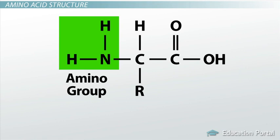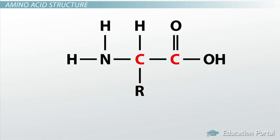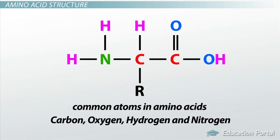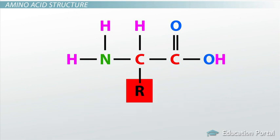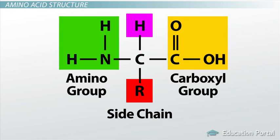and an amino group, which is the NH2 on the other side. So we have C's, O's, H's, and N's in the basic structure of an amino acid, which means the most common atoms in amino acids are carbon, oxygen, hydrogen, and nitrogen. But you probably also notice the R group. This represents a side chain, and it's the side chain that makes the 20 amino acids different from each other. However, what we're concerned about in this lesson is how the different amino acids come together to form protein, so let's stay on that track.